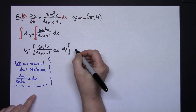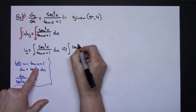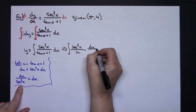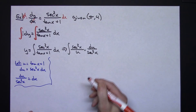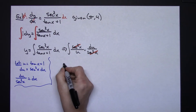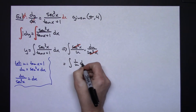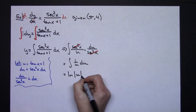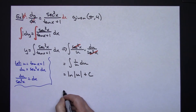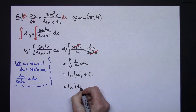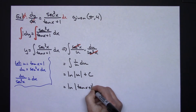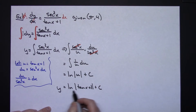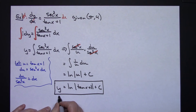Substituting in: sec²x stays on top, the denominator is replaced by u, and dx is replaced by du / sec²x. The sec²x terms cancel, leaving the integral of 1/u du, which integrates to ln|u| + c. Replacing u gives ln|tan x + 1| + c. Adding the y, the general solution is y = ln|tan x + 1| + c.